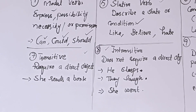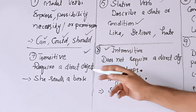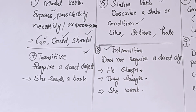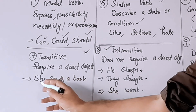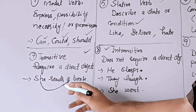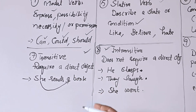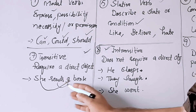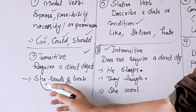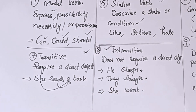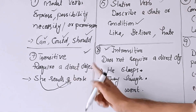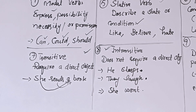Transitive verbs require a direct object — transitive verb میں ایک direct object ہوتا ہے جس پر subject کا action perform ہو رہا ہوتا ہے۔ جیسے 'she reads a book' یا 'they play football' — یہاں 'book' اور 'football' direct objects ہیں جو main verb کے right after آتے ہیں۔ Transitive verbs کی passive voice بنتی ہے۔